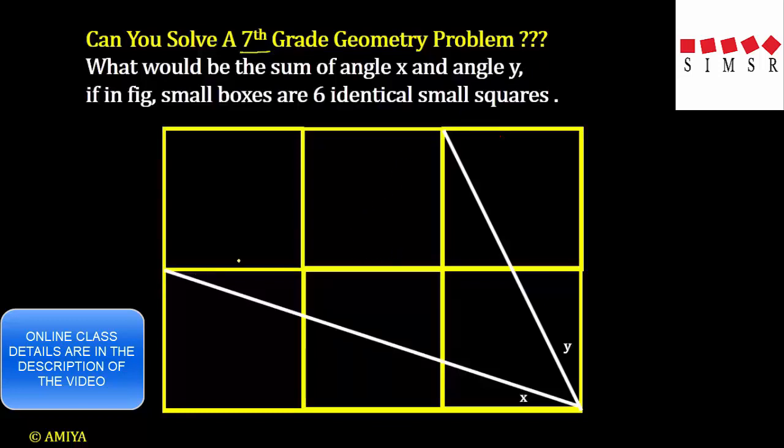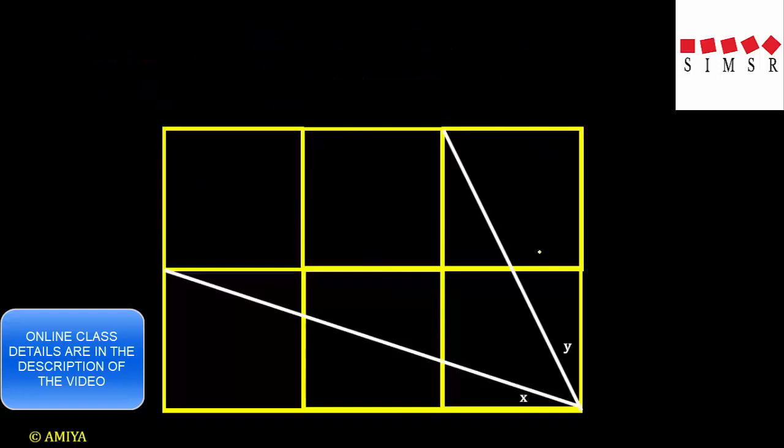Yeah, this is one of the easiest problems and it has more than 50 solutions. Today, we will check the easiest one which a 7th grade student would understand. We have nothing but 6 identical squares and we know in the squares, all angles are nothing but 90 degrees. So this angle should also be 90 degrees. If we find this angle, then we can say the required angle x plus y is nothing but if we say this one is theta, it should be 90 minus theta.